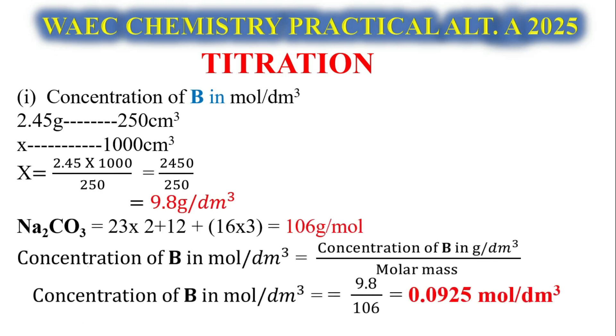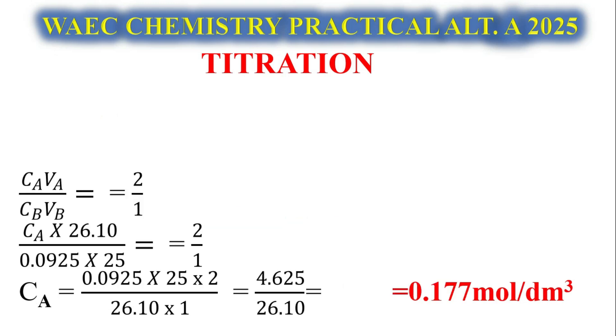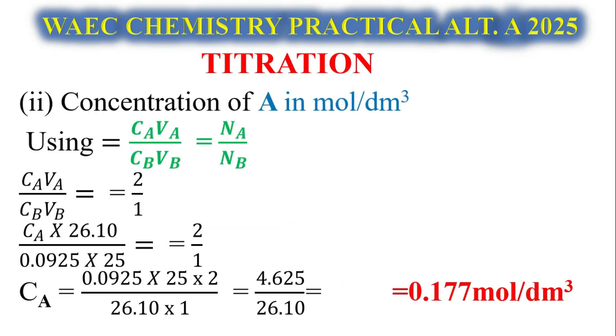First solution: find a way to convert 250 cm³ to grams per dm³. That's 2.45 grams in 250, X in 1000. When you do that, you get 9.8 grams per dm³. Use your formula: concentration in mol per dm³ = concentration in g per dm³ / molar mass. Molar mass is 106, so 9.8 divided by 106 gives 0.0925. This serves as our CB. The next question: concentration of A. Using CaVa/Na = CbVb/Nb, you have 0.177 mol per dm³, that's our CA.